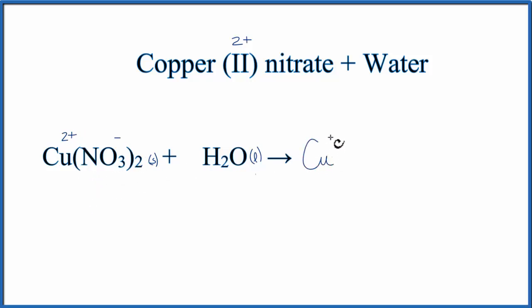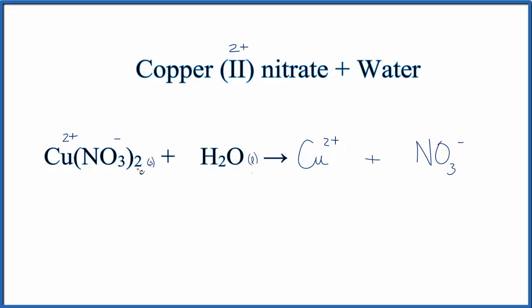We end up with that Cu2+ plus the nitrate ion. Since we have a subscript of 2 after this NO3 in parentheses, that means we have two NO3 ions, two nitrate ions. So we do need to put a 2, coefficient of 2 in front, to show that we have two of those ions.